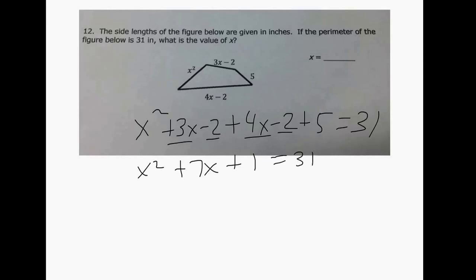Equals 31, we know this guy can't be over there so we move him over so that'll be minus 30. x² + 7x we do combine these and that makes -30.